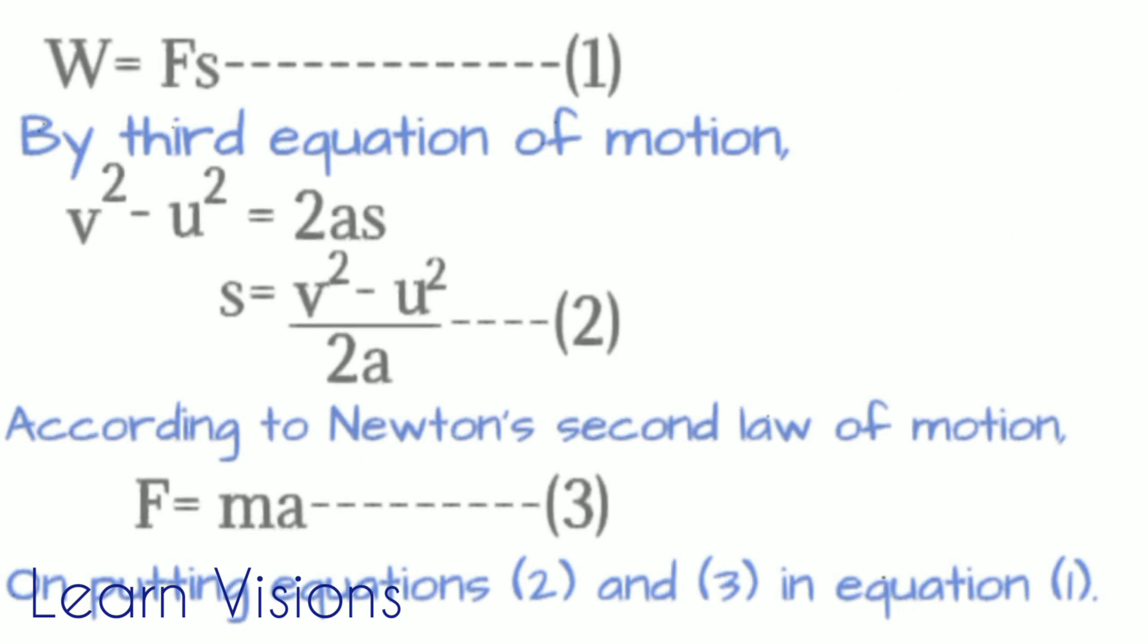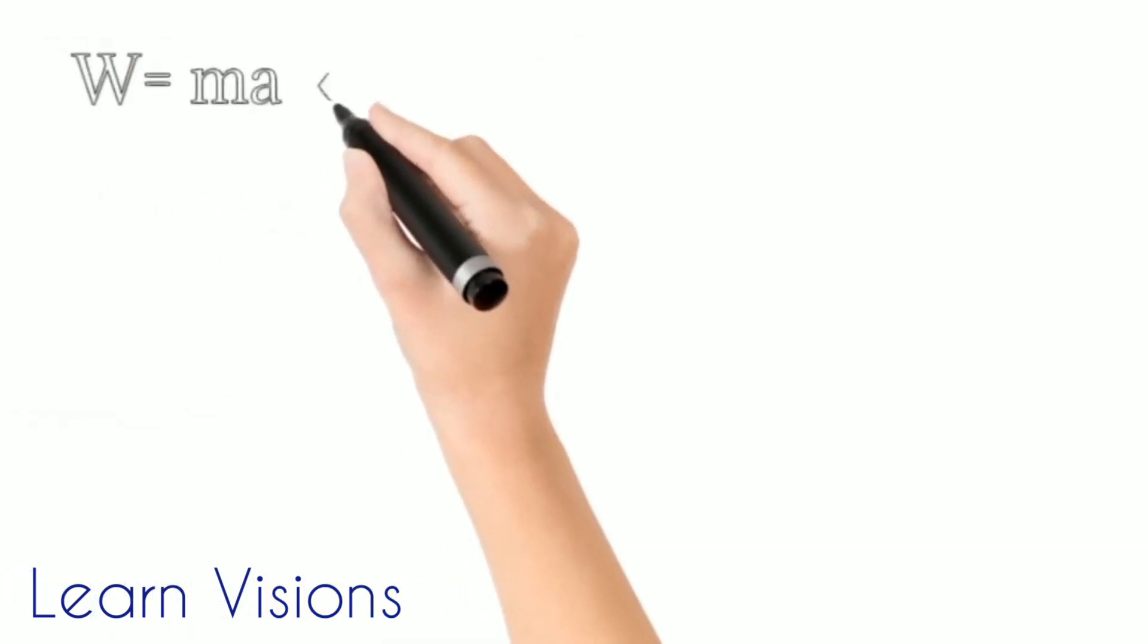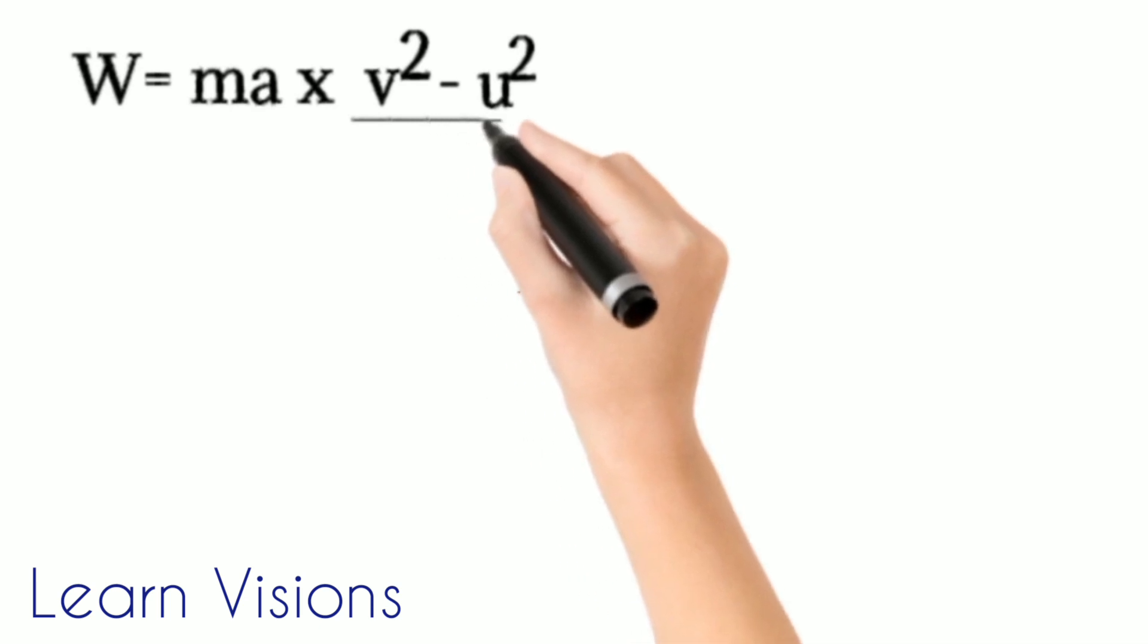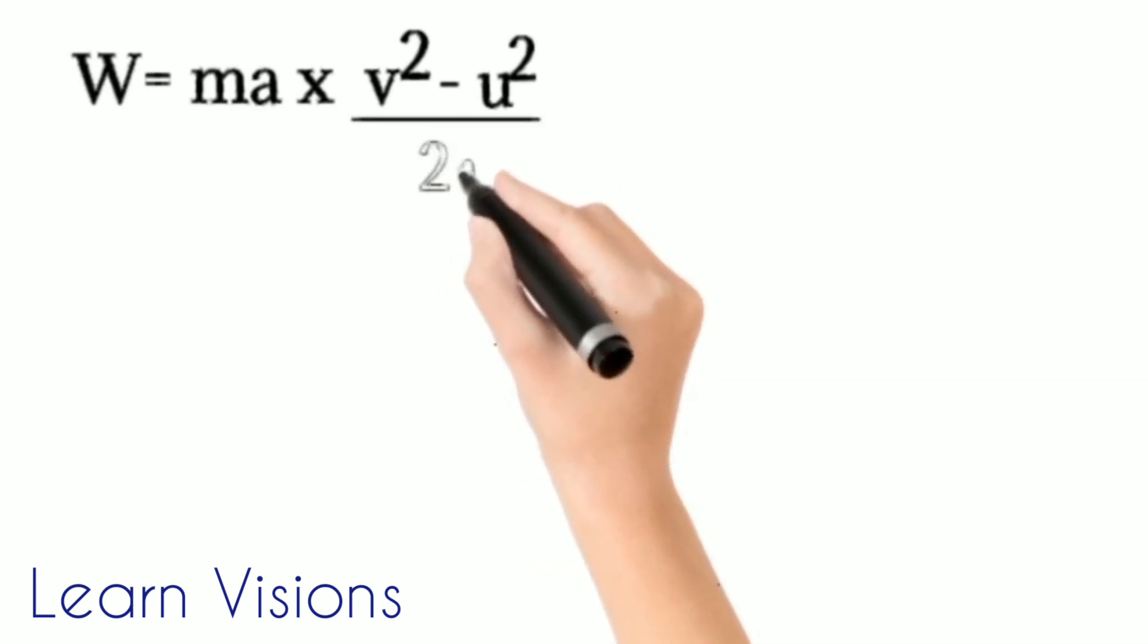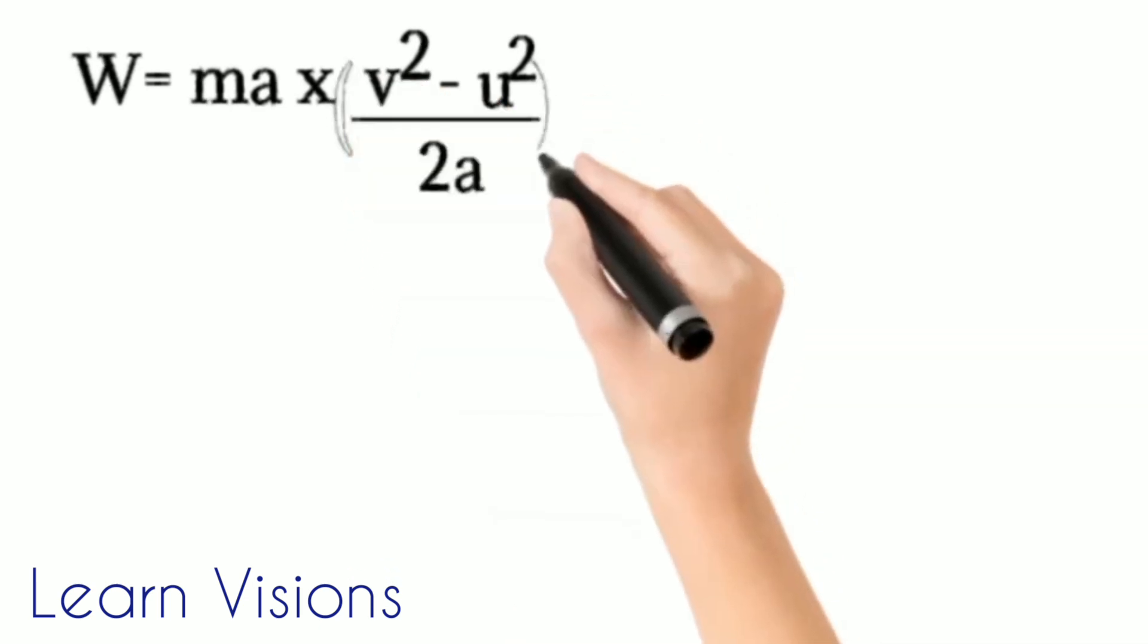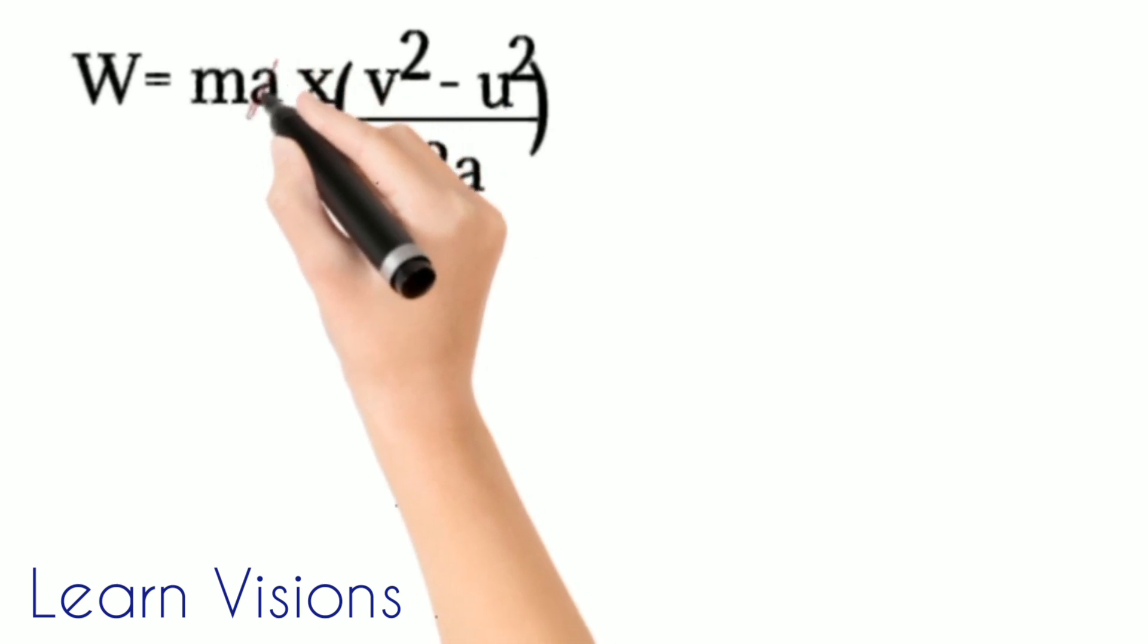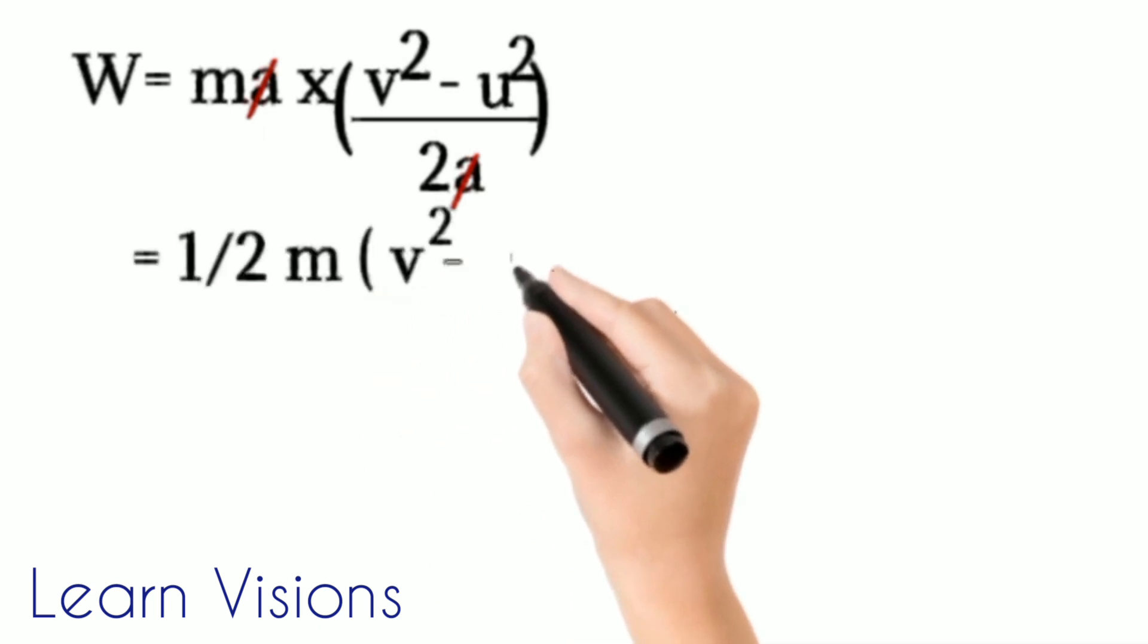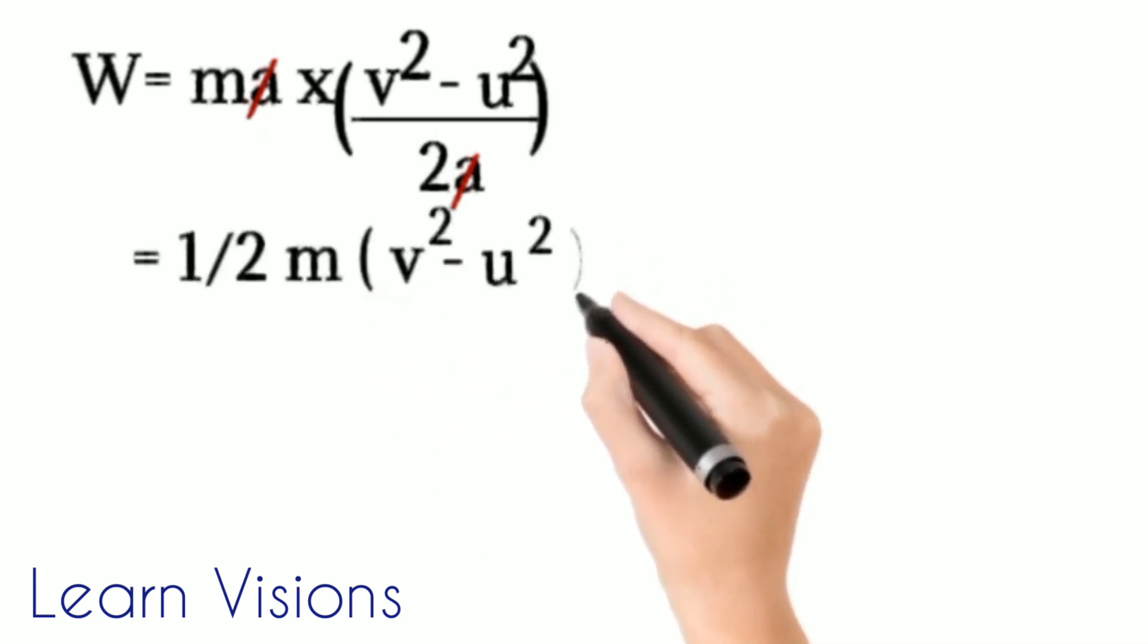We will get that work equals ma times v squared minus u squared divided by 2a. The a's will cancel here, and we will get half mass times v squared minus u squared.